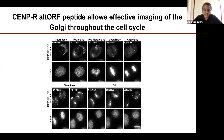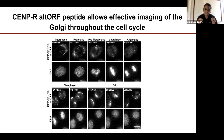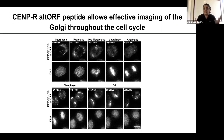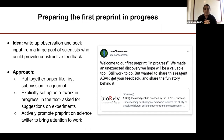We also wanted to see if this peptide could be used as a dynamic marker for the Golgi. We performed live cell imaging to see what the Golgi looked like throughout one cell cycle, and the alt-ORF very robustly localized to this structure throughout the cell cycle. At this point we were really excited, and two questions emerged: how does this very small peptide get to the Golgi, and could it potentially be used as a tool for people studying the Golgi?